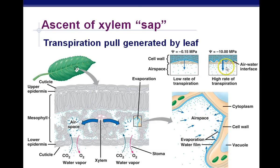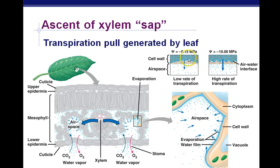The bigger the difference in water potential between the xylem and the airspace within the mesophyll, the faster the transpiration or evaporation of water. If the space inside is moist and the xylem is already wet, there's not much difference in water potential and movement is slow. However, if it's very dry outside, the leaf becomes very dry, allowing more water to evaporate quicker, resulting in more water loss by the plant. Water exits the leaf through the stomates at the bottom, moving from high to low water potential.